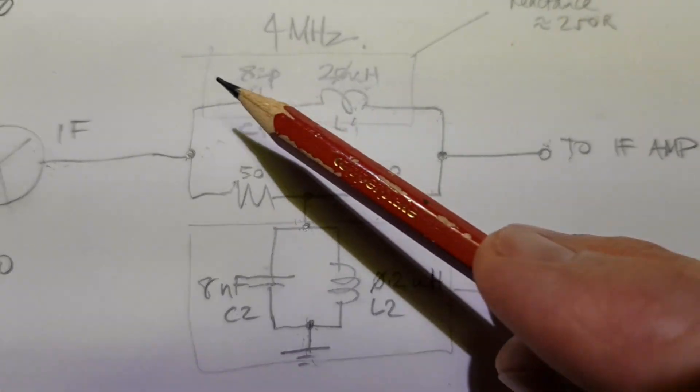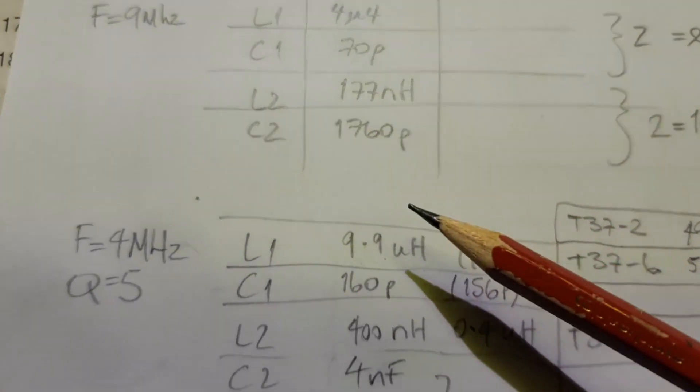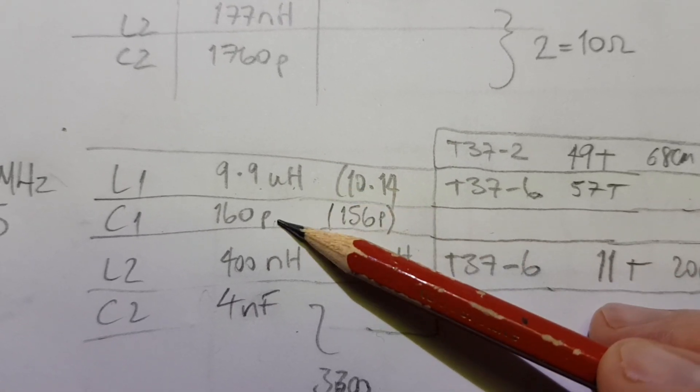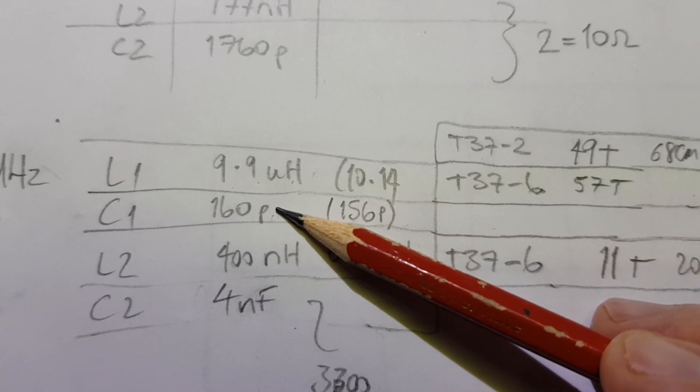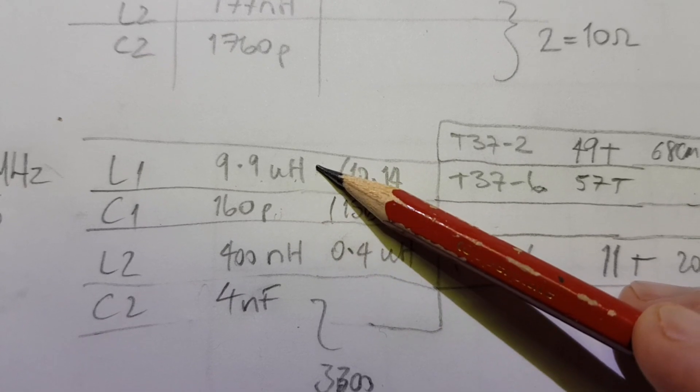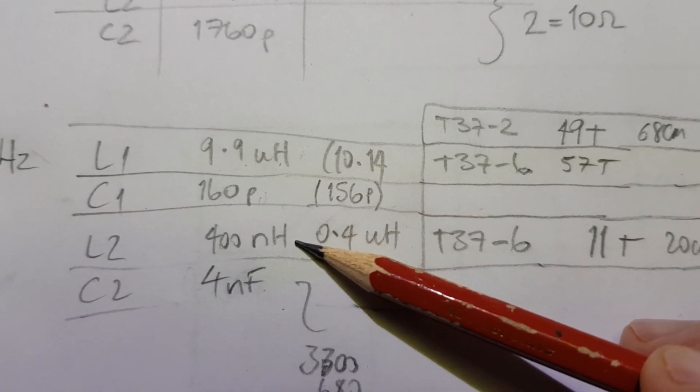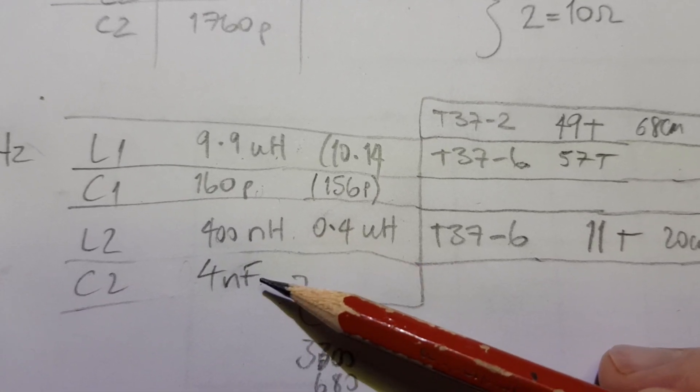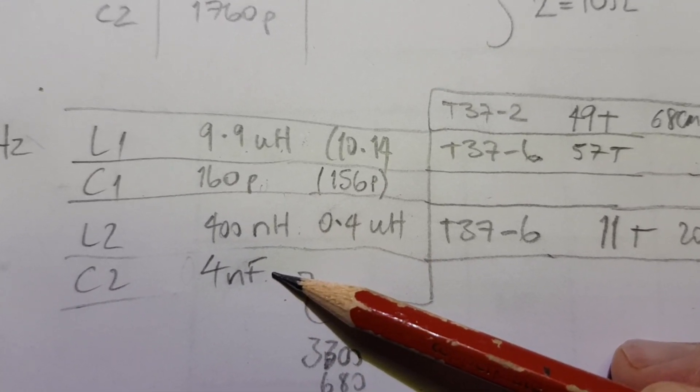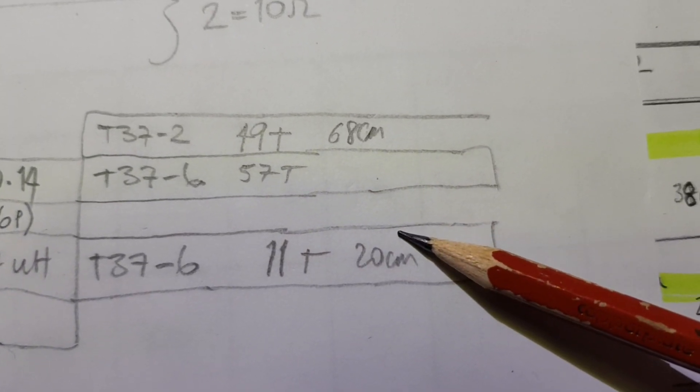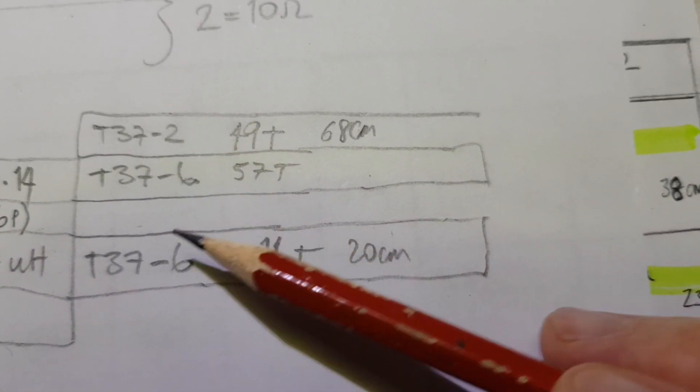I dropped my Q to 5 and that halved the values, so the series tuned circuit came down to 10 microhenries in series with 160 picofarads, a little bit more manageable. And for the parallel tuned circuit, 400 nanohenries in parallel with 4 nanofarads. These are all fairly achievable using T37 toroids.